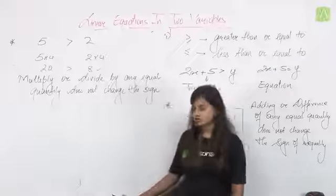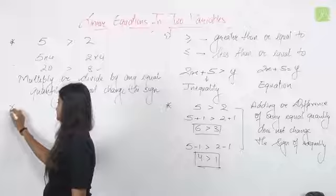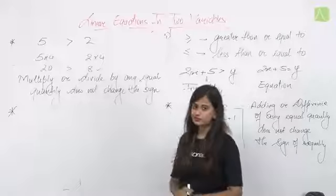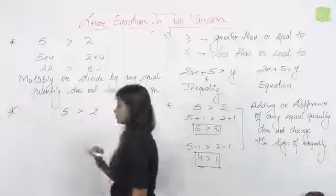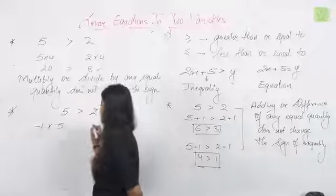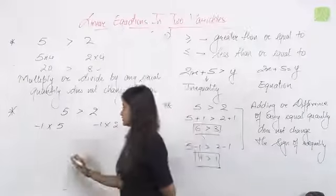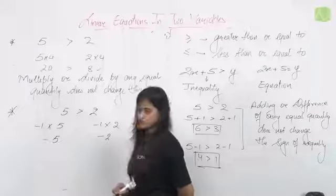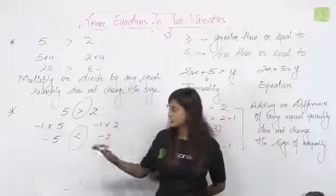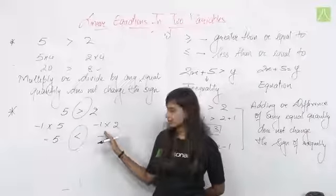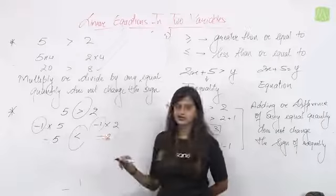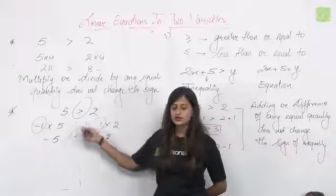But when does the sign change? If 5 > 2 and we multiply both sides by −1: −5 and −2. Now −5 is less than −2, so the sign changed. This means when we multiply or divide both sides by a negative quantity, the inequality sign is interchanged — if it was greater than, it becomes less than, and vice versa.